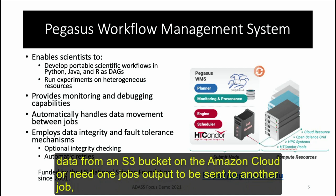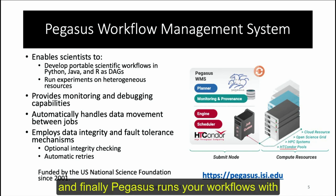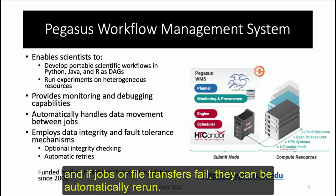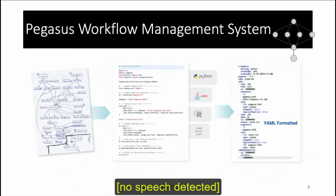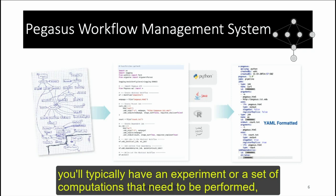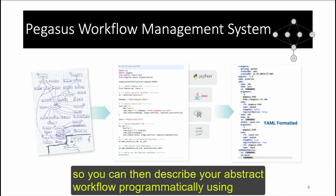Whether pulling input data from an S3 bucket on the Amazon cloud or sending one job's output to another, Pegasus handles this automatically. It runs workflows with data integrity and fault tolerance in mind — performing integrity checks on all files and automatically rerunning failed jobs or file transfers. When working with Pegasus you typically have an experiment or set of computations to perform, which at a high level looks like a directed graph. You describe your abstract workflow programmatically using a Python API.